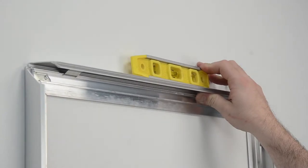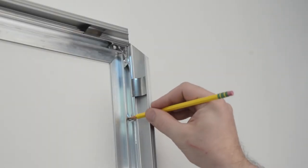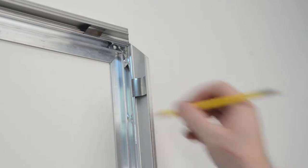Use the level to line up the frame. Once level, use the pencil to mark the four holes where the wall anchors and screws will be inserted.